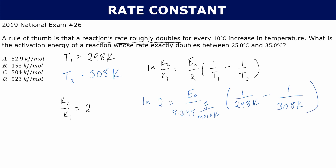Simplifying for Ea, it comes out to 52,897 joules per mole, which is right about 52.9 kilojoules per mole — that's answer choice A. That is the activation energy of this reaction, and this is a good scenario where the two-point form is helpful.